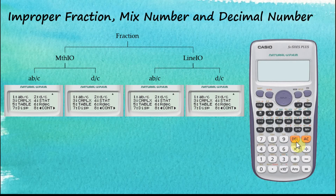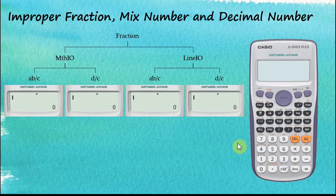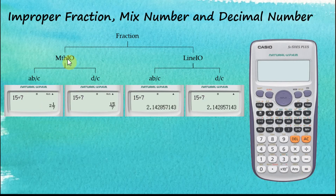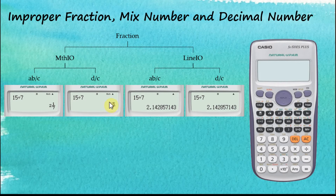Let's clear the screen and perform a simple calculation: 15 divided by 7. So far, for all types of displays, the input looks the same. When we press equals, for MathIO both answers display as fractions — the one set to mixed numbers shows a mixed number, and the one set to improper fractions shows an improper fraction. For Linear IO, regardless of whether we chose mixed numbers or improper fractions, the answer is given in decimal numbers.